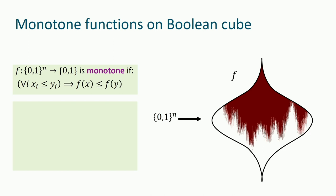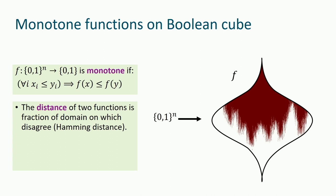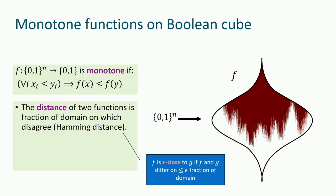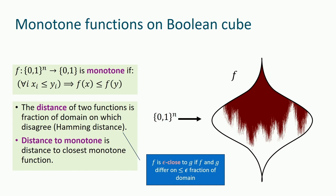We're going to talk about the distance of a function from monotone. When we define the distance of two functions, we use the Hamming distance — the fraction of the domain on which two functions disagree. Epsilon-close means that f and g differ on at most an epsilon fraction of the domain. Distance to monotone is the distance to the closest monotone function.